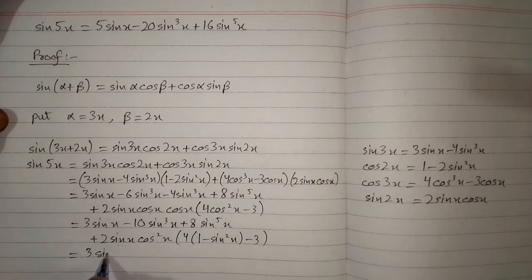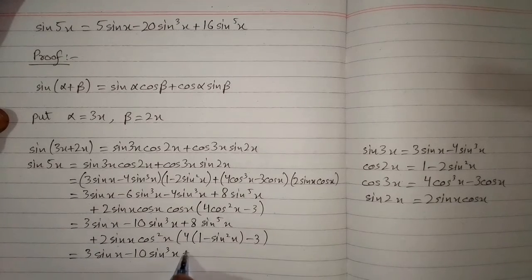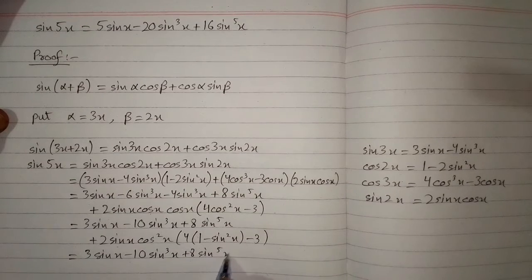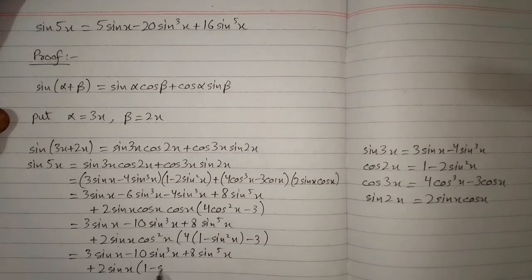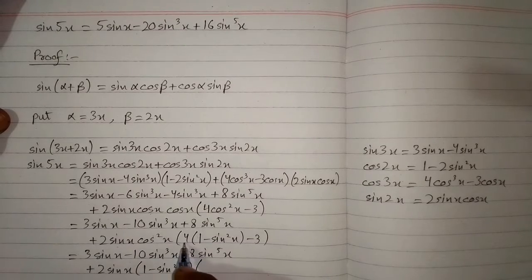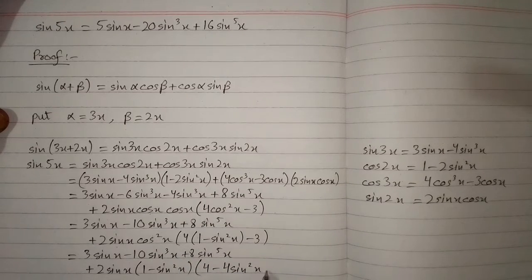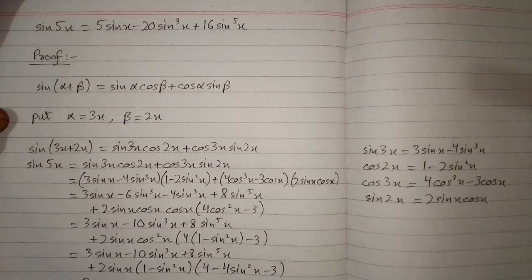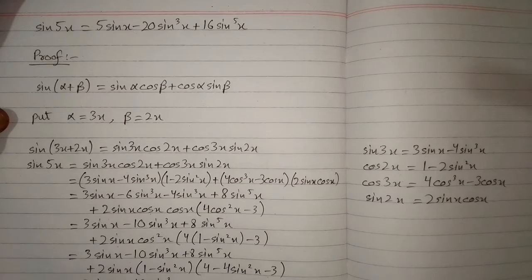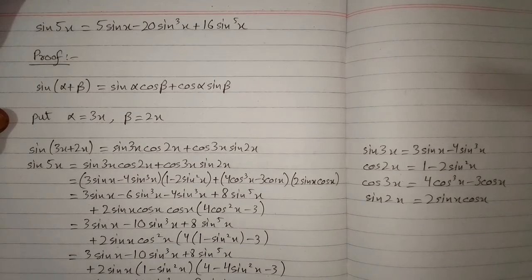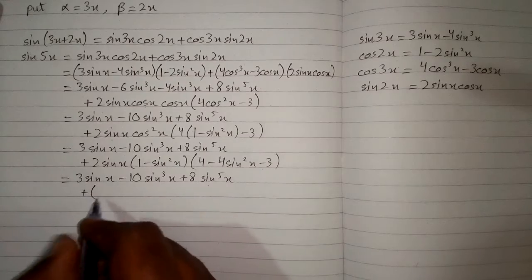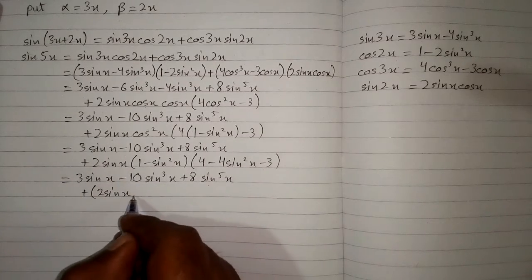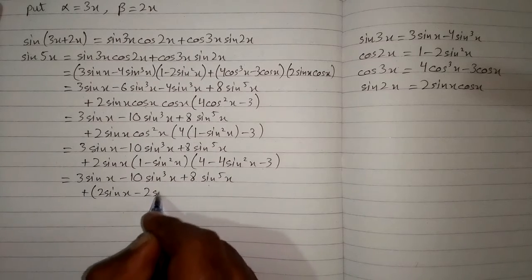So we have 3 sine x minus 10 sine cubed x plus 8 sine to the power 5x. Then plus 2 sine x, and for the cos squared x we write 1 minus sine squared x. So 4 times 1 is 4, and 4 times minus sine squared x is minus 4 sine squared x, minus 3. This gives 3 sine x minus 10 sine cubed x plus 8 sine to the power 5x, plus 2 sine x, plus 2 sine x minus 2 sine cubed x, times 4 minus 4 sine squared x minus 3.